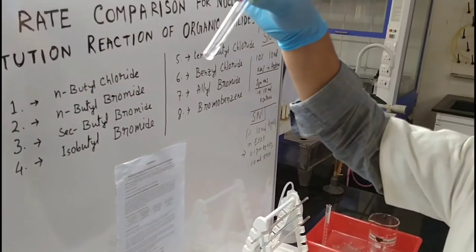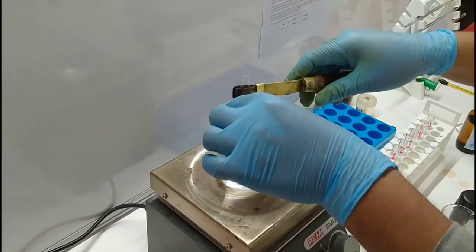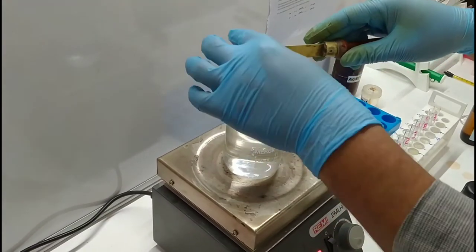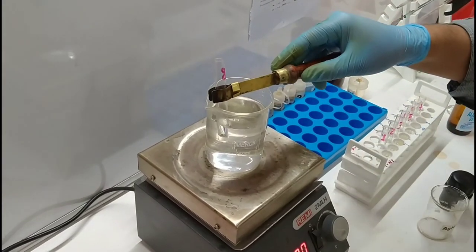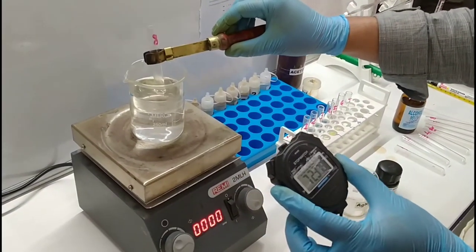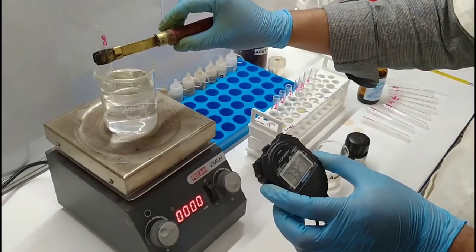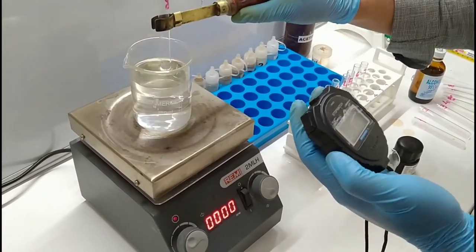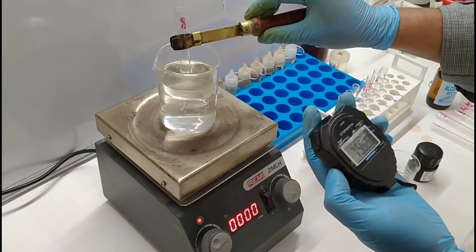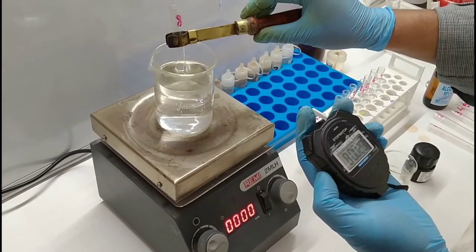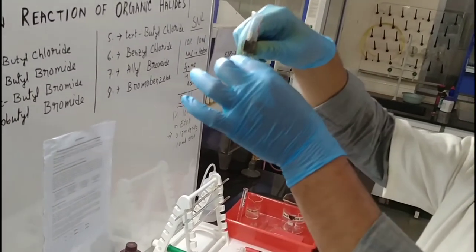Still nothing is appearing inside the 8th test tube, so we have to put it in the hot water bath. At 7 minutes 20 seconds, still no changes inside the test tube. 8 minutes completed and no changes inside the test tube — that means we consider this one as no precipitation. The SN2 bromobenzene test is complete.